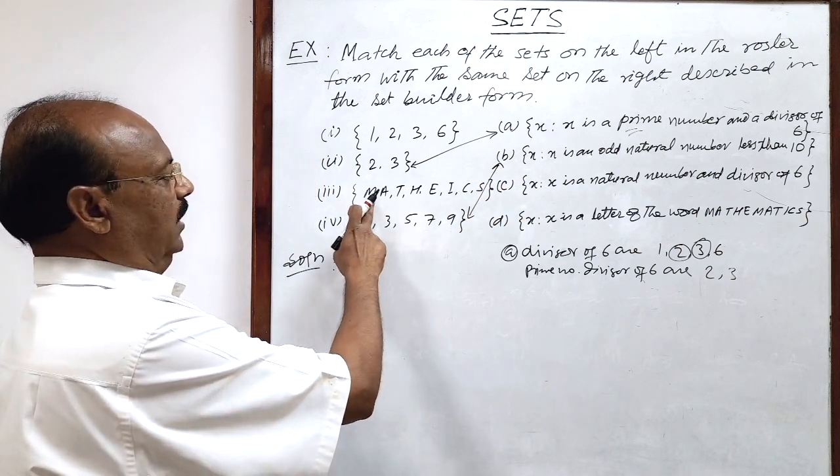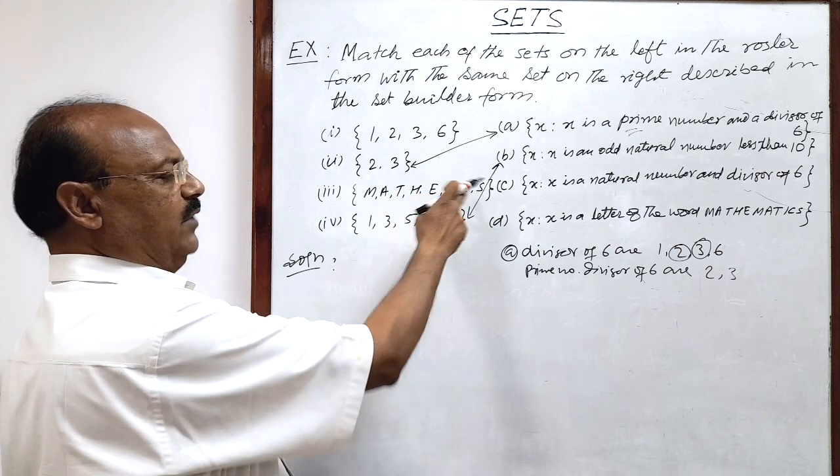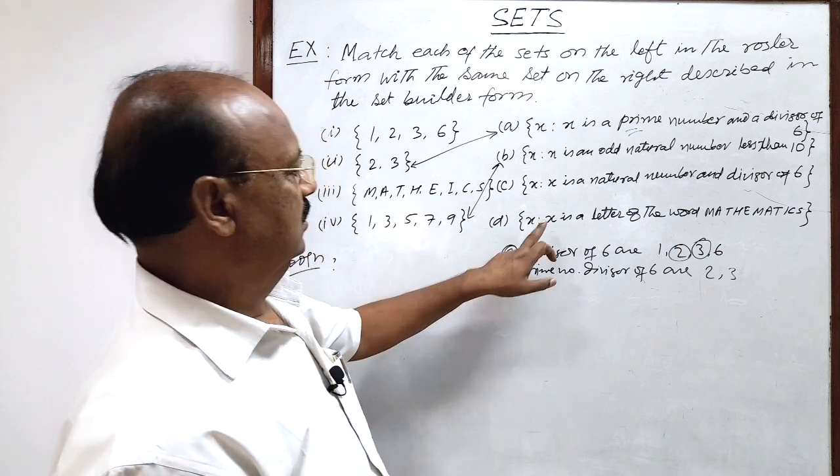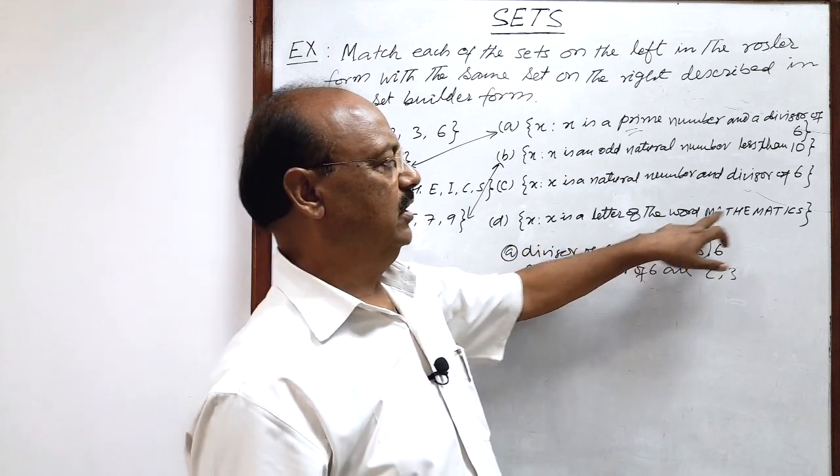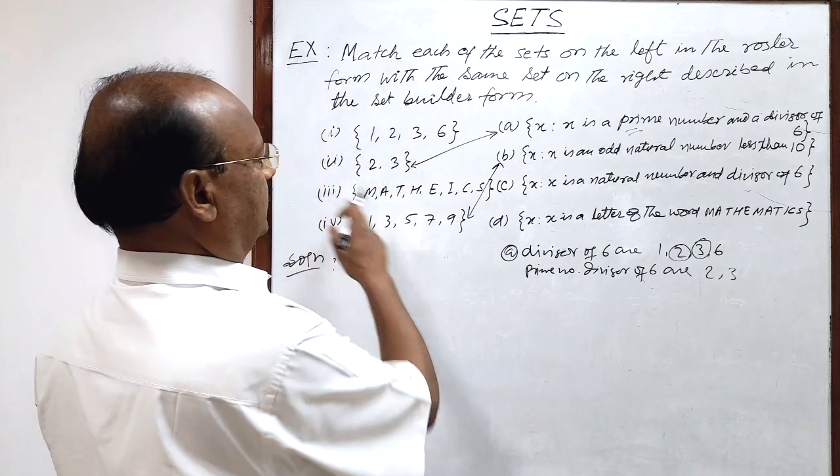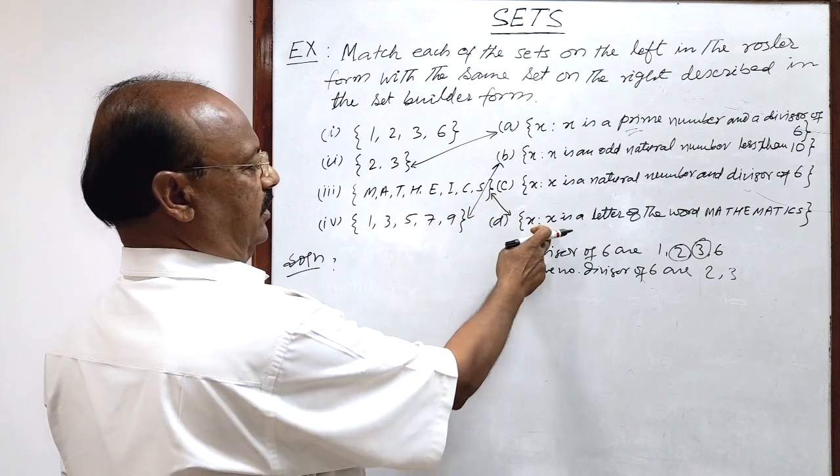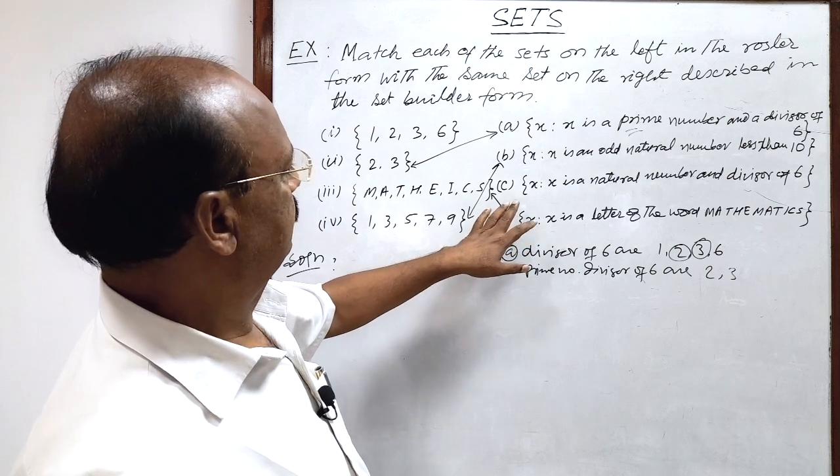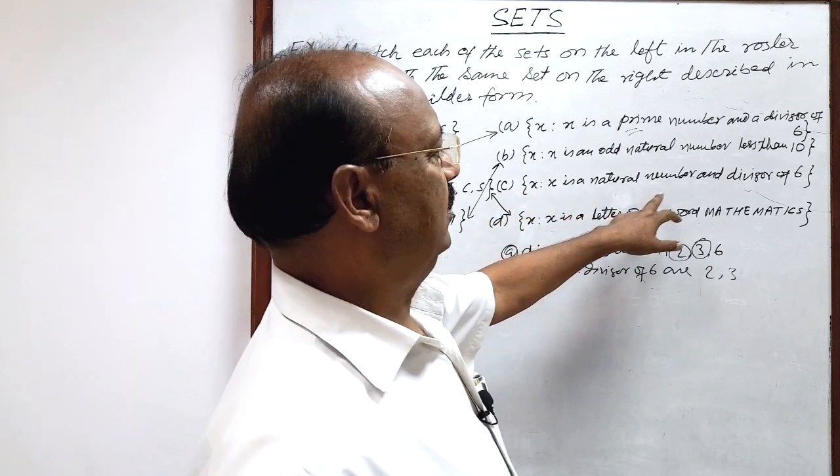Now, M, A, T, H, E, I, C, S these are the elements of this set and you see this set D x where x is a letter of the word mathematics. So here third set is matching with set number D.